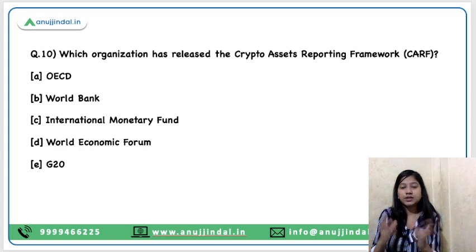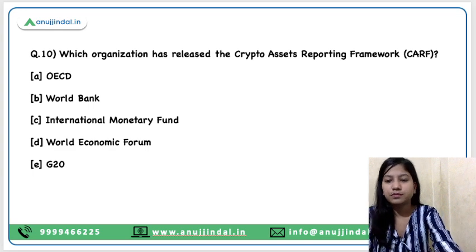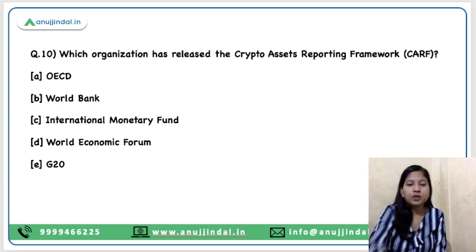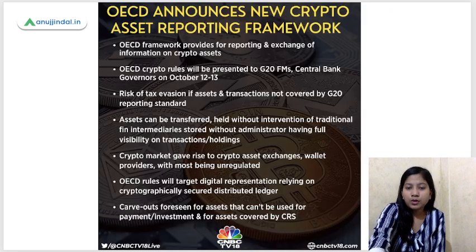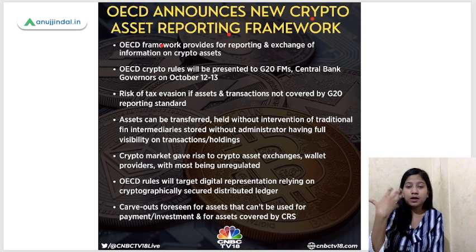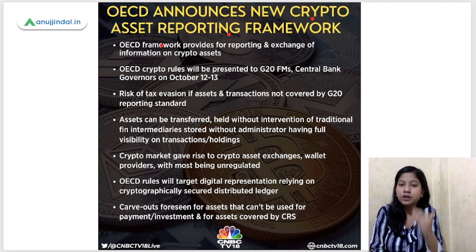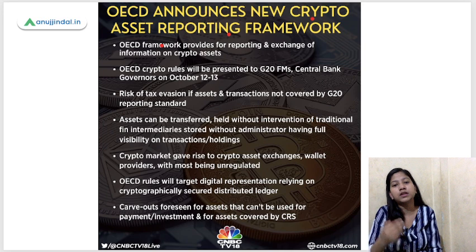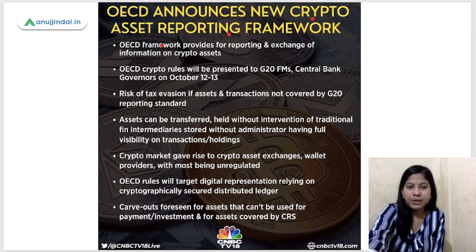The last question, but very important. Which organisation has released the Crypto Asset Reporting Framework? OECD — the Organisation for Economic Cooperation and Development — is the right answer. How many countries are members of this organisation? That is your task — do tell me. What is this Crypto Asset Reporting Framework? From the name itself, it is basically a framework which tells the standards of reporting to crypto agencies — all agencies involved in crypto exchanges or crypto-related activities.